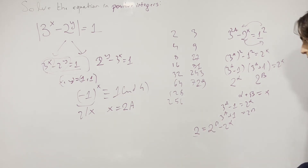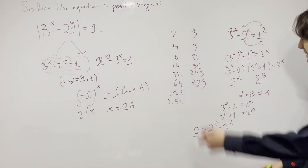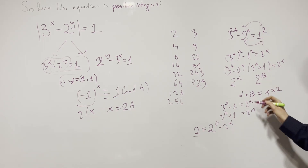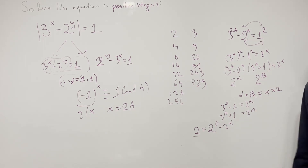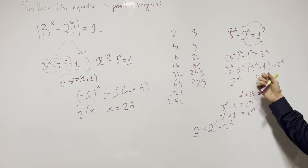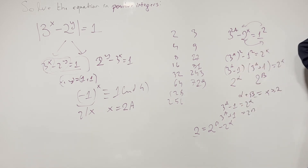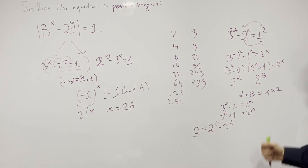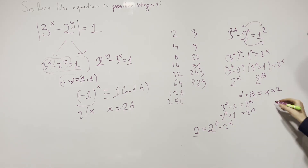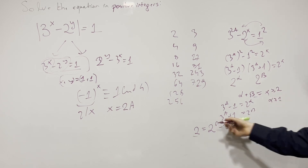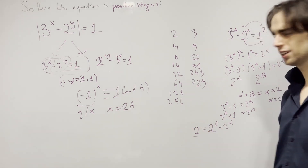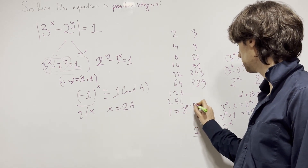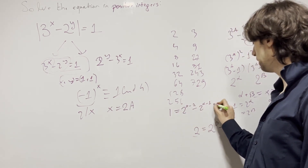This is divisible by 2. Since y is greater than or equal to 2, at least beta is greater than or equal to 1. Beta is greater than or equal to alpha because 3^a + 1 is bigger than 3^a - 1. So this must be divisible by 2, which means alpha is greater than or equal to 1. Then we can divide by 2 and get 1 equals 2 to the (beta minus 1) minus 2 to the (alpha minus 1).